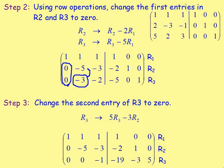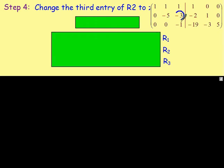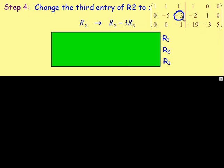Next step: we want to change the third entry of row 2 to 0. To do that, we use a combination of row 2 and row 3. Don't use row 1 here because that will change this from 0 to something else. So, change the third entry of row 2 to 0. We can say that row 2, if we keep that as it is and take away 3 lots of row 3, well, that will be negative 3 take away negative 3, which gives us the 0. So, that would work out.